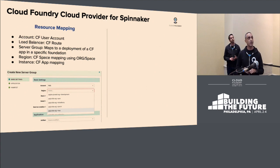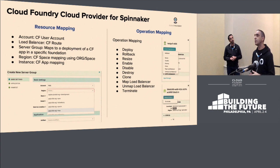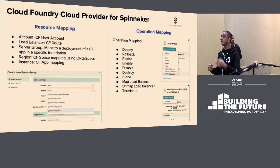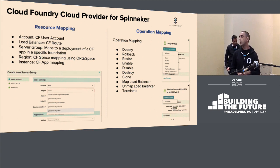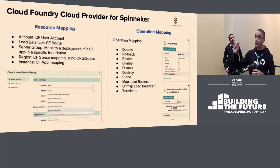An instance is a single container instance of your app. If you've deployed an application with 10 instances, Spinnaker shows those 10 instances separately. The operation mapping includes deploy, roll back, resize (CF scale), enable, disable, destroy, and clone — which lets you take an existing server group and use it as the base for a next deployment. Map load balancer and unmap load balancer are quite new, giving you the ability to add or remove routes. Terminate instance kills a specific application instance, not the whole app.